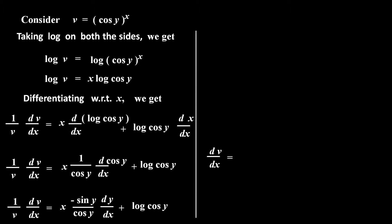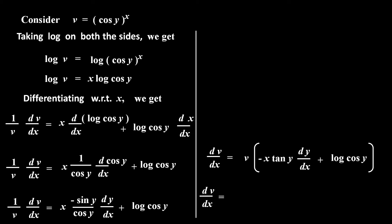Multiplying both sides by v, we get dv by dx is equal to v into bracket minus x into tan y — as sin y upon cos y — into dy by dx, plus log cos y. So, dv by dx is equal to: substituting the value of v, cos y raised to x, into the whole bracket.